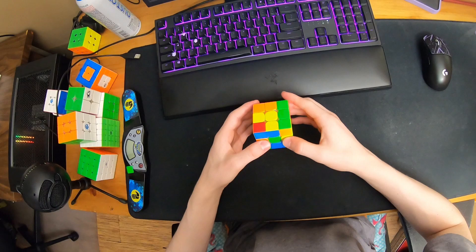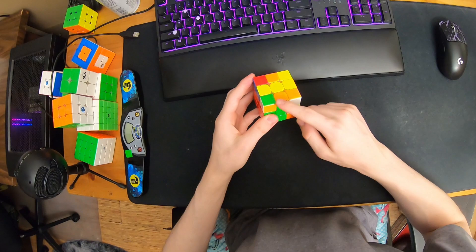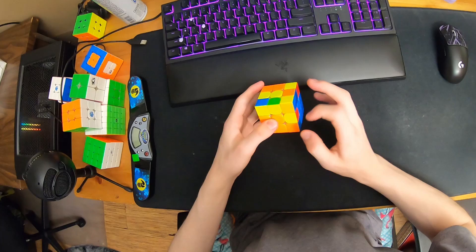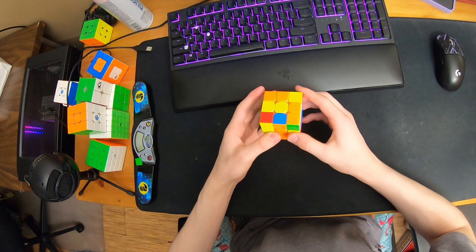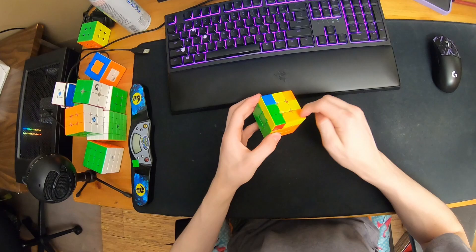Then I can insert the answer that. Now I just see this so I immediately do that. Then we have this case so I do this algorithm R prime F prime R U R U prime R prime F. Then I see we already have blocks everywhere.